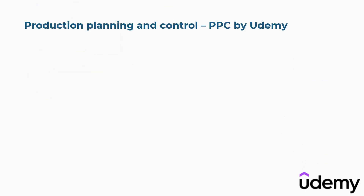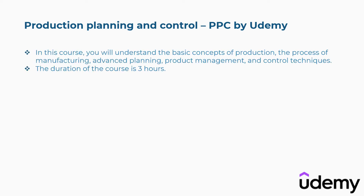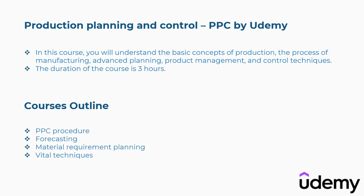Third is Production Planning and Control (PPC) by Udemy. In this course, you will understand the basic concepts of production, the process of manufacturing, advanced planning, product management, and control techniques. The duration of the course is 3 hours. The concepts covered are: PPC procedure, forecasting, material requirement planning, vital techniques, and more.